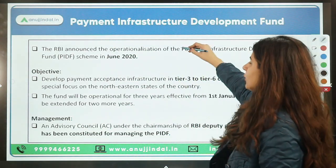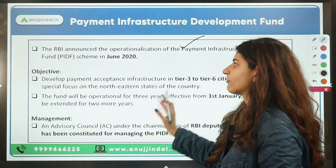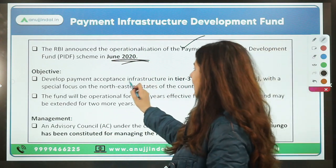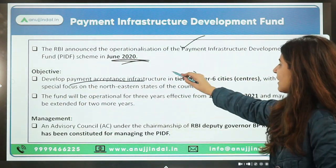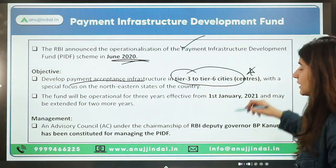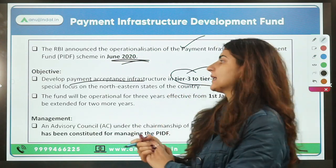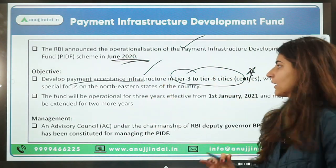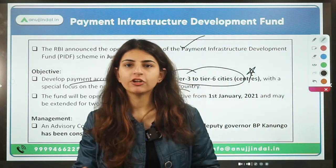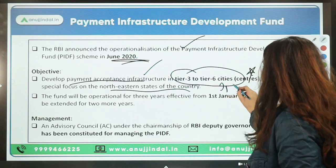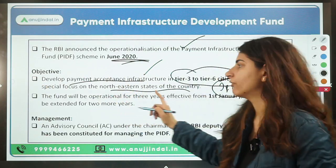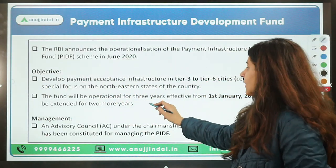The RBI operationalized this fund in June 2020. The objective was to develop payment acceptance infrastructure in India, especially in Tier 3 to Tier 6 cities. A special focus was also given to the North East states, and subsequently Jammu & Kashmir UT and Ladakh UT were also added to the objective.